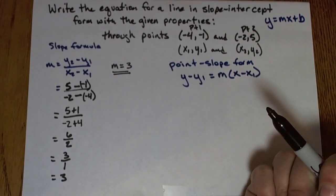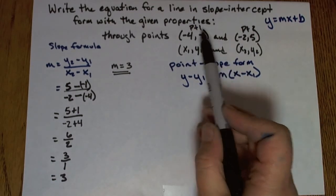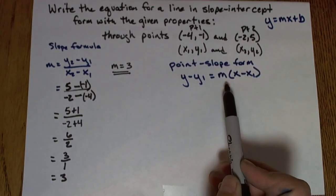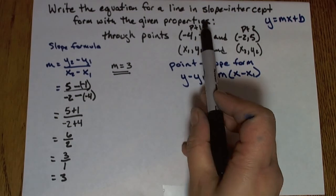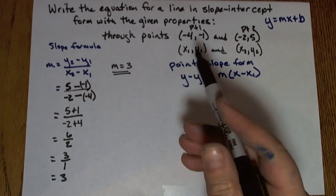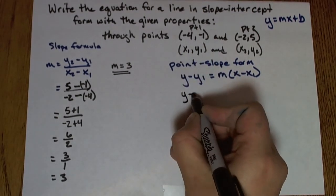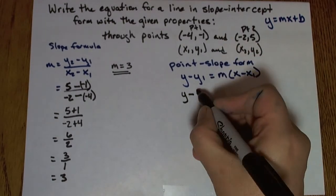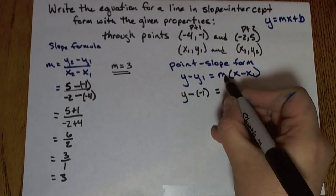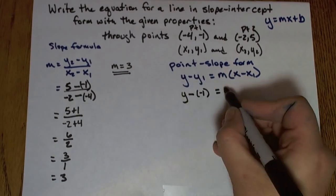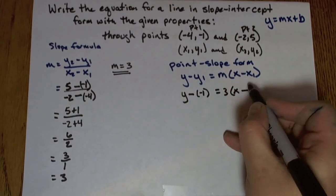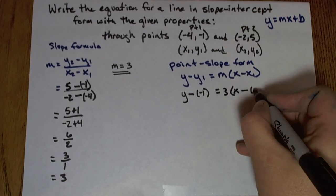This is a new part of the problem, so I can choose either of my points to put into this. If I go ahead and choose the same one I called point 1 before, I'll have y minus the y-value, negative 1, equals m, my slope which is 3, times x minus the x-value of the point I chose, which is negative 4.